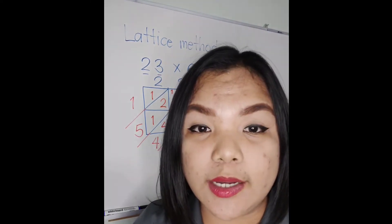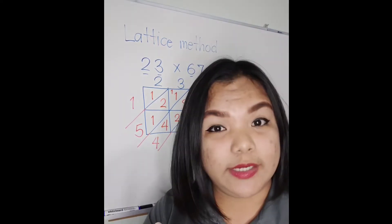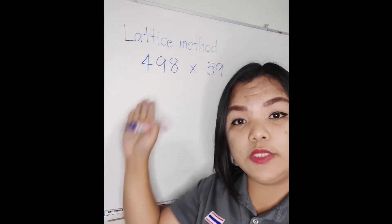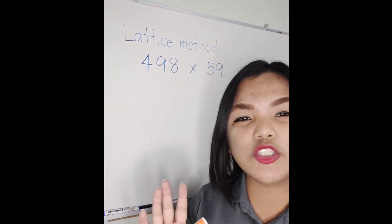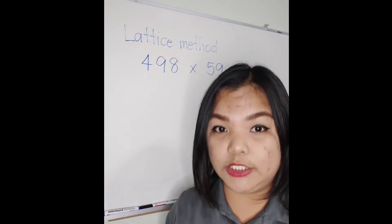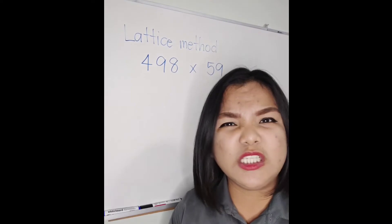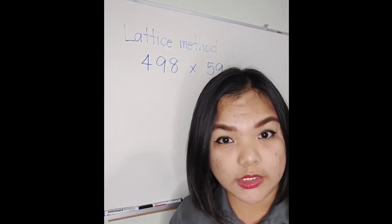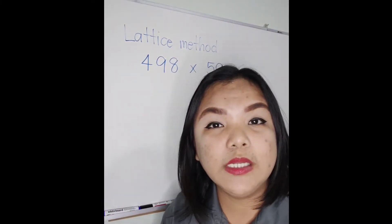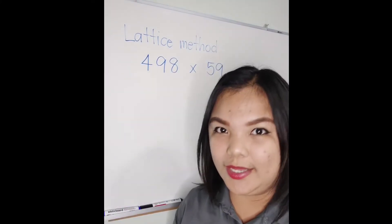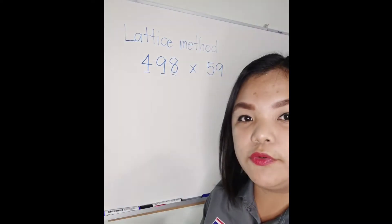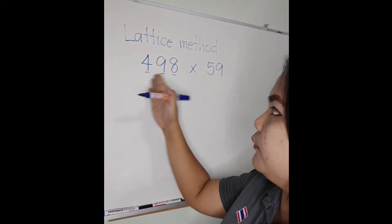What if we have three digits by two digits? Ready, let's do it! Okay, what if we have this number? This one is not really a trick, but it is the other way of multiplying numbers. Okay, so let the student choose.